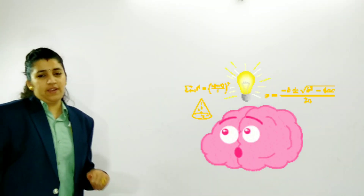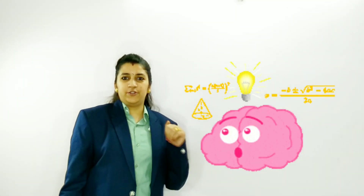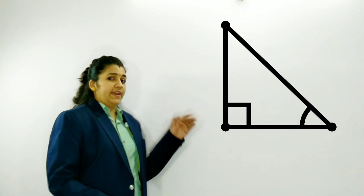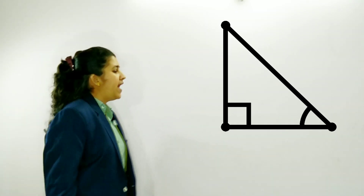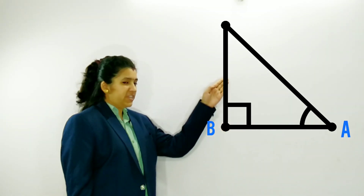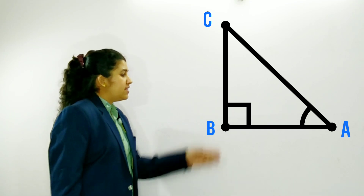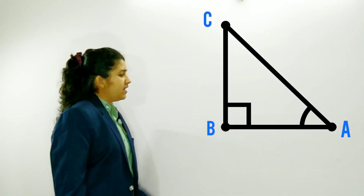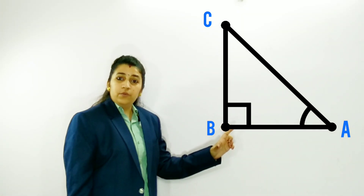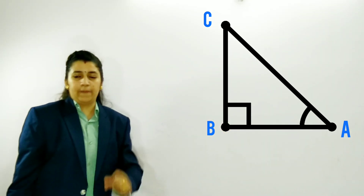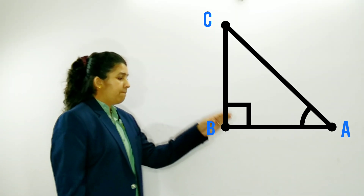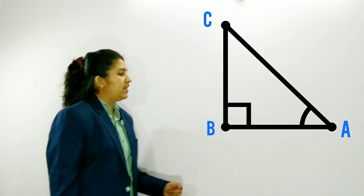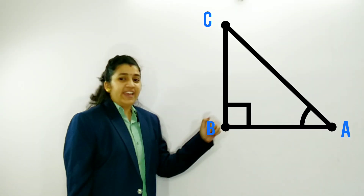The basic points of trigonometry are the six ratios. We have a right triangle with points A, B, and C. The point B has a 90-degree angle. Let us suppose the angle theta — theta is the angle. Now let us take angle A.